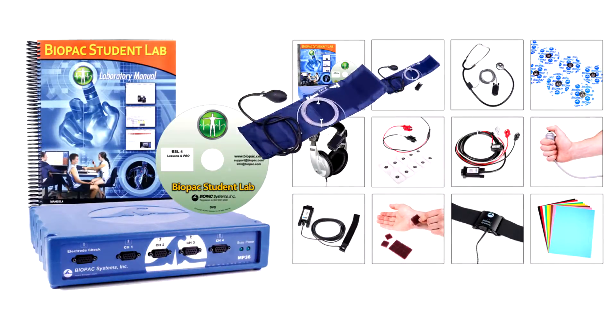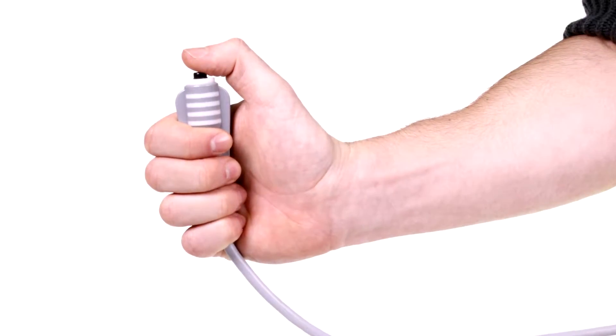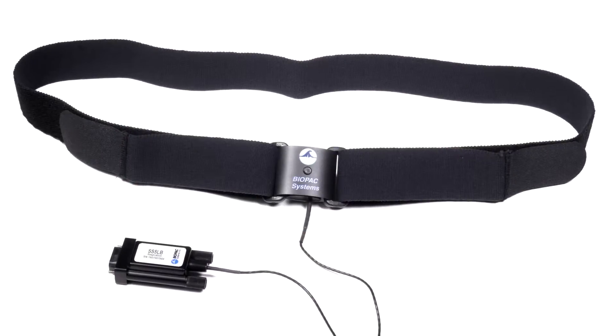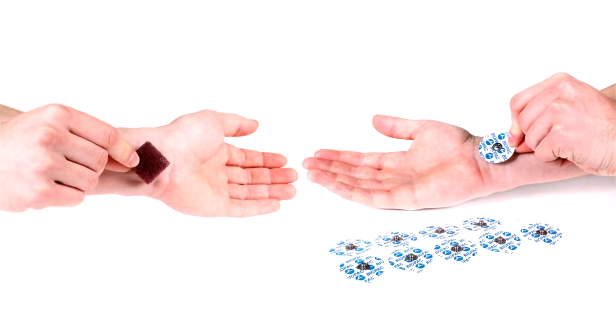Blood pressure cuff transducer and stethoscope. Headphones. Hand switch. Pulse plethysmogram. Shielded lead set. Respiratory effort transducer. EDA leads and electrodes. Lesson accessories. And electrode accessories.